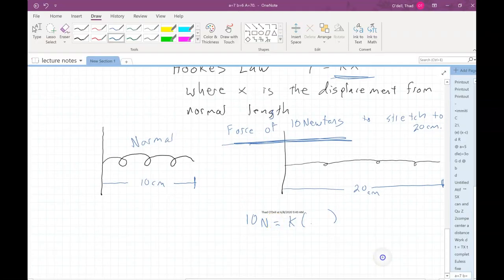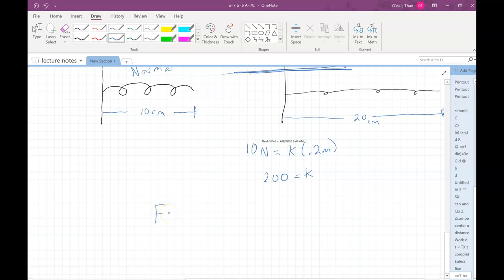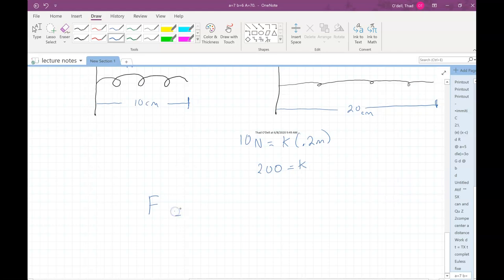So if we divide 10 by 0.2, we get 200. So my constant, in this case my spring constant, is 200. So that means the force that requires to stretch this spring is always going to be equal to 200 times the displacement, how far I want to displace it.